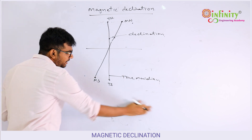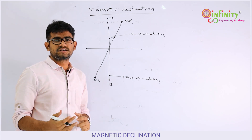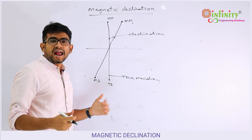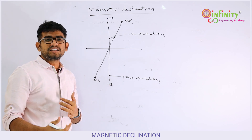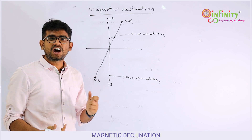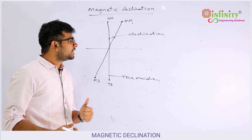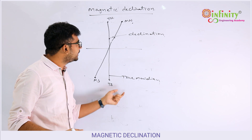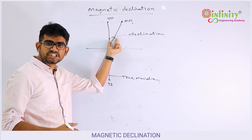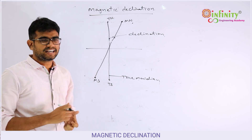In the field, when we measure the bearings, we use the magnetic compass, so we always get the magnetic bearings. Once you determine the magnetic bearing at a given location, if you know the declination, then you can determine the true bearing of the line.